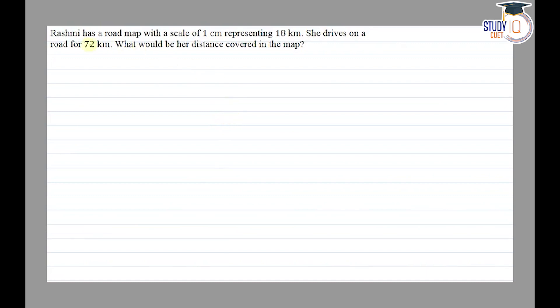So the question says that Rashmi has a road map with a scale of 1 cm representing 18 km. She drives on a road for 72 km.